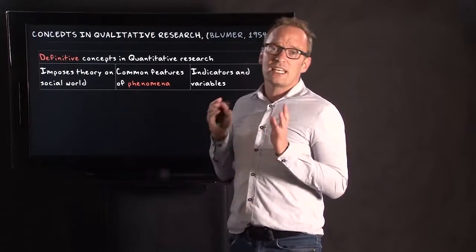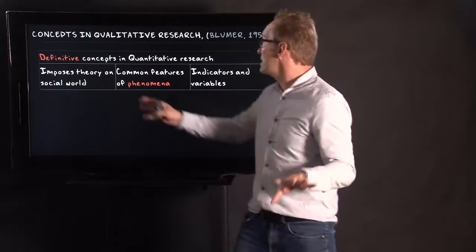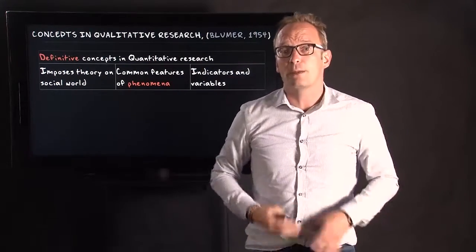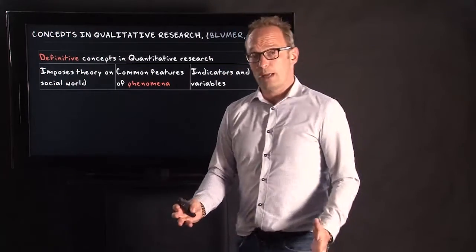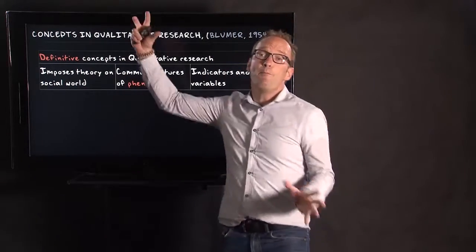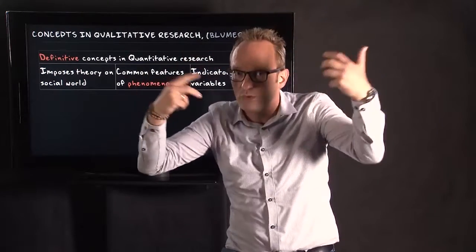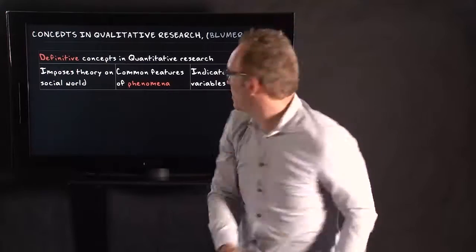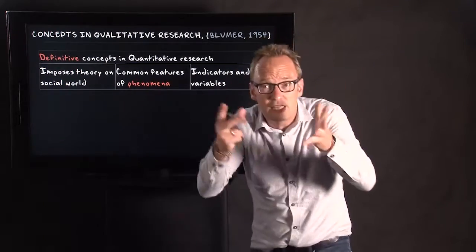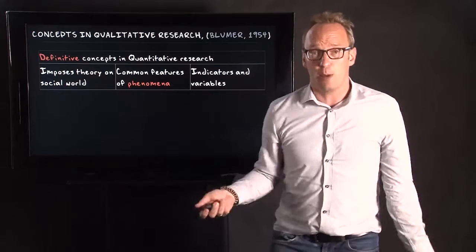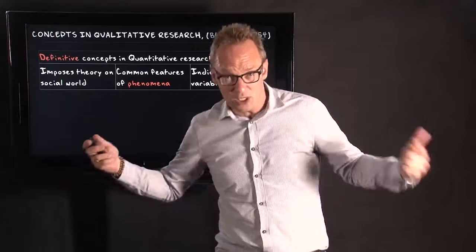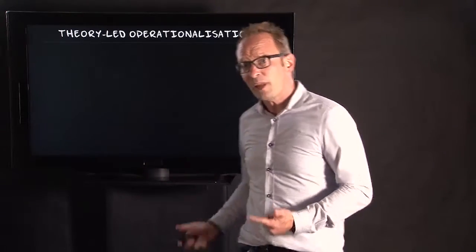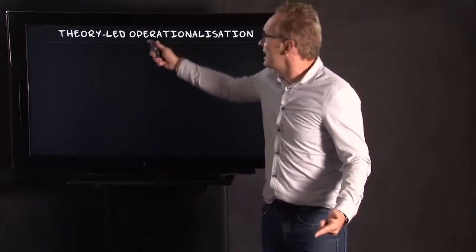I want to focus first on a distinction made by Bloomer in 1954 — a very important distinction between two types of concepts. First, concepts as used in quantitative research, which he calls definitive concepts. These concepts impose a theory on the social world: from theory you derive a concept, say poverty, identify its common features, and then work with indicators and variables. It's the standard way of using concepts in quantitative research, dealing with a kind of operationalization that is theory-led.